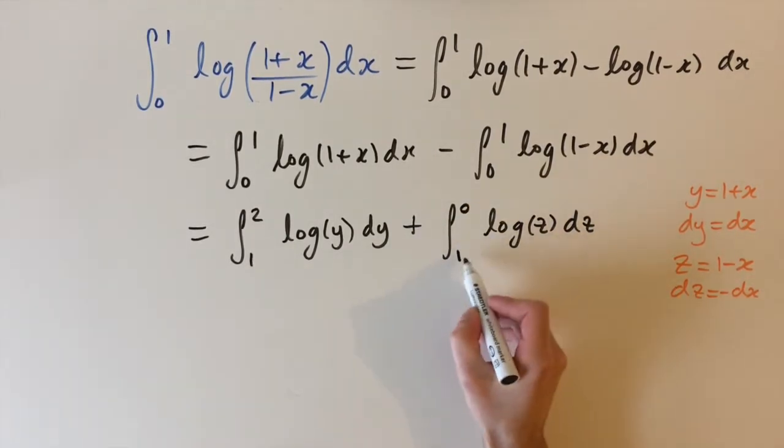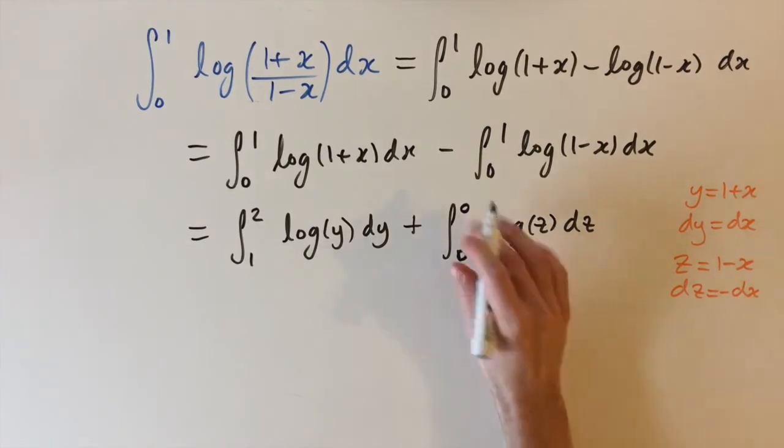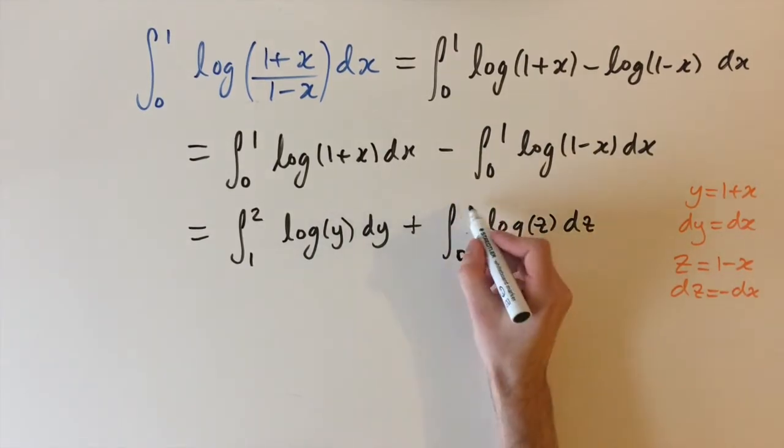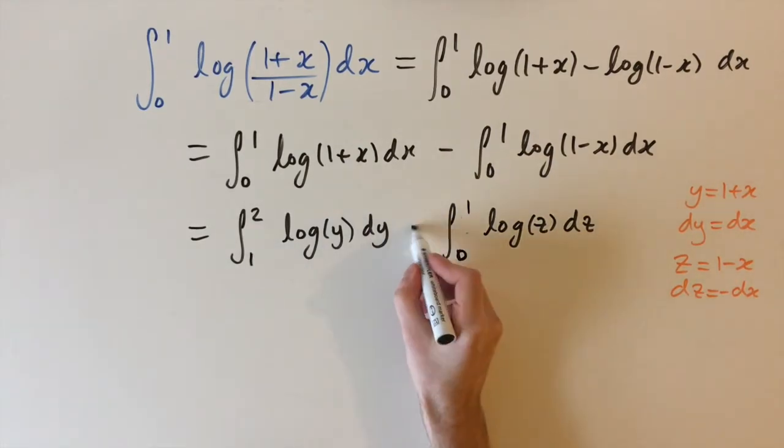So maybe this is slightly backwards because we have the larger number on the bottom but remember we can actually switch the limits by changing the sign of the integral so we can write this as 0 to 1 and then we just need to put a minus sign in the front so this is the same thing.